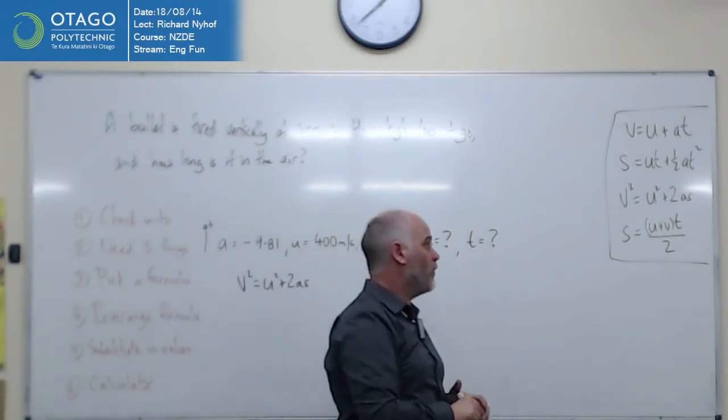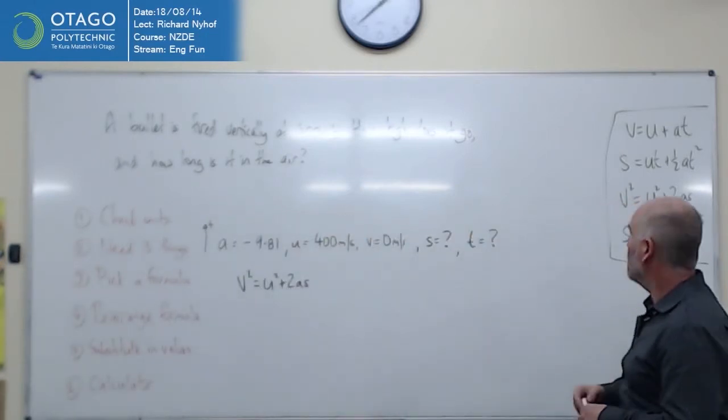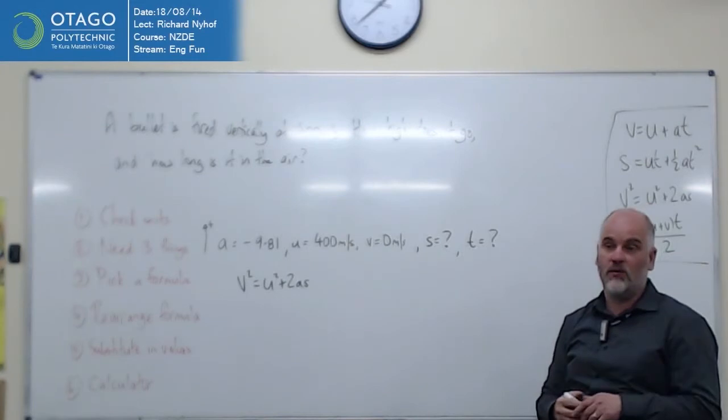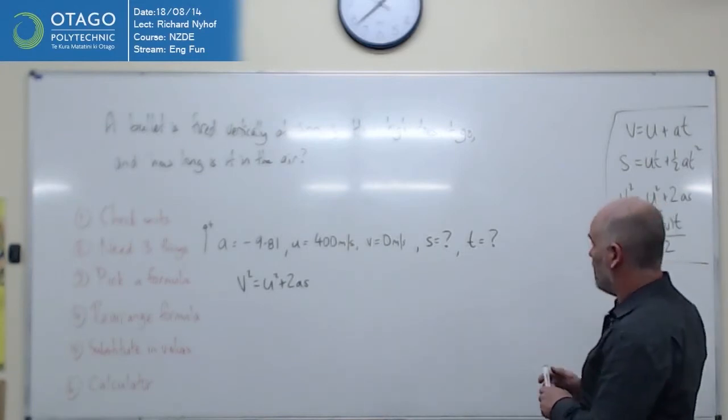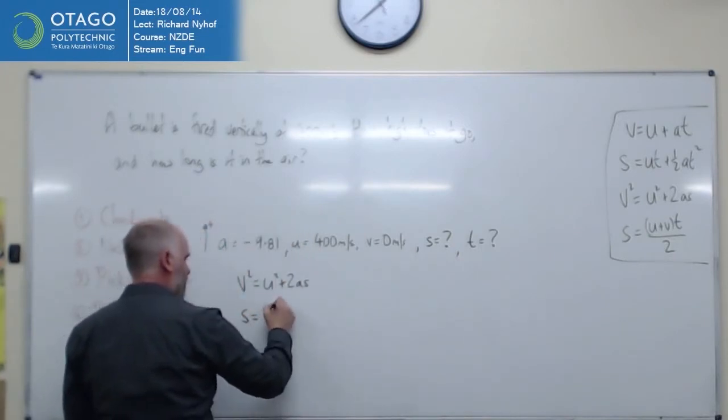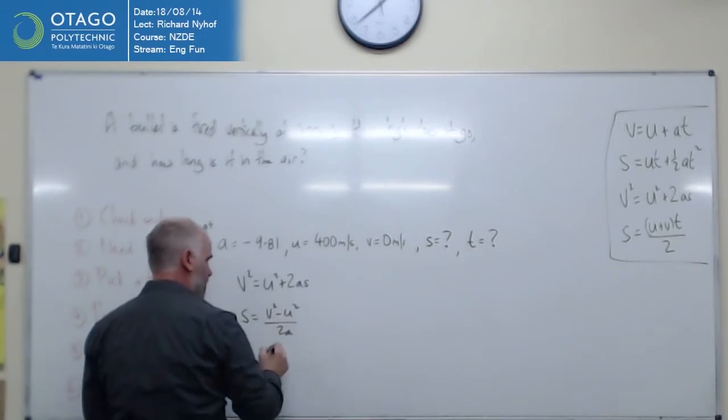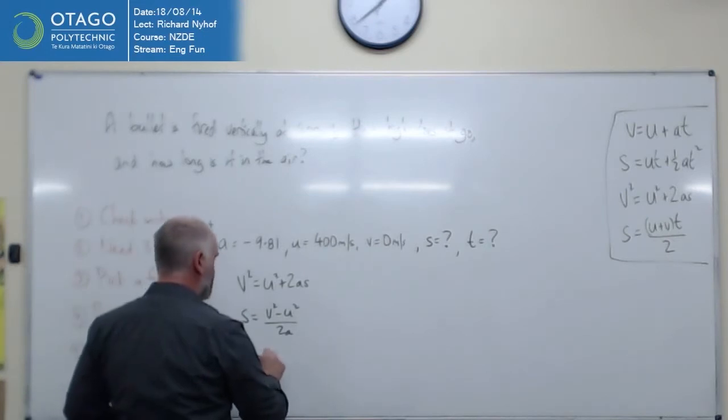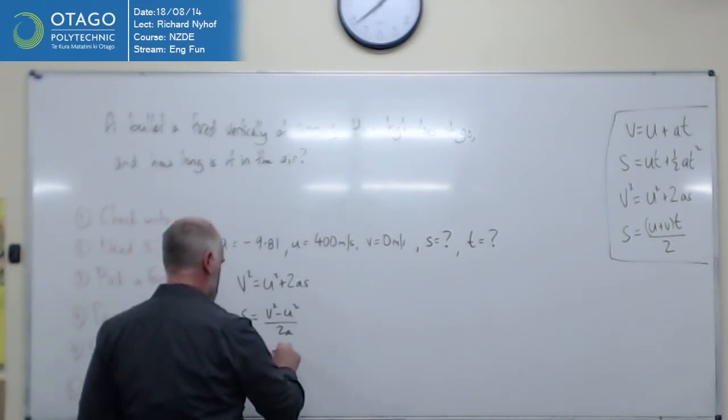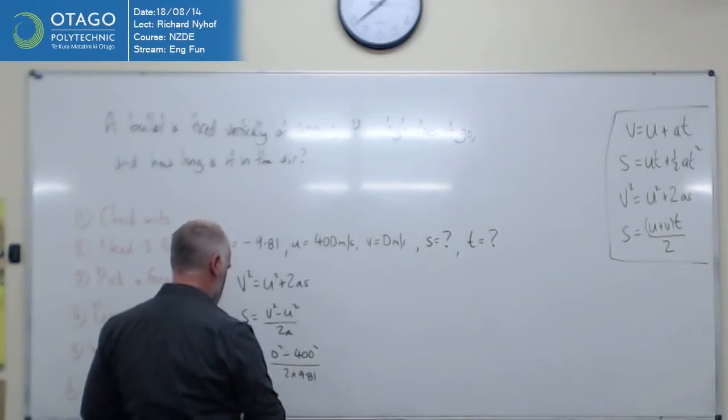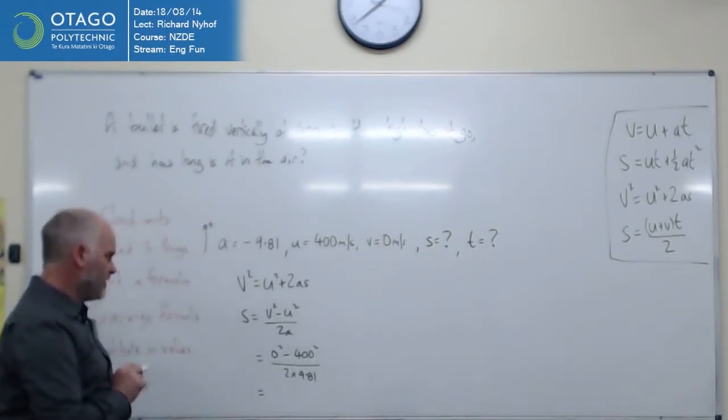You could do the question in the other order, maybe. You could find out T first using the top formula to work out T, then another formula to work out S. Might have been a better way to do it. But here we're trying to find S. So rearrange this formula to get S by itself. S is V squared minus U squared divided by 2A. V is 0, U is 400, 2 times 9.81 equals something.